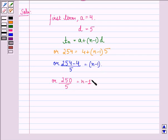Or n minus 1 is equal to 50. Or n is equal to 51.